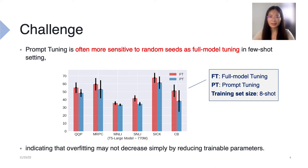In the diagram, the black bars indicate the standard deviation, and you can see the standard deviation of prompt tuning is often larger than full model tuning, even though we tune far fewer parameters.